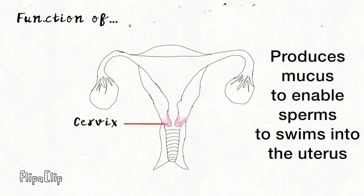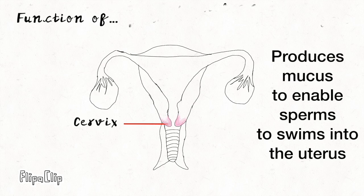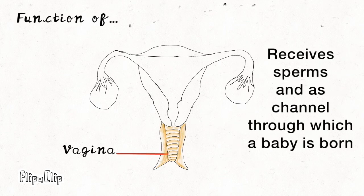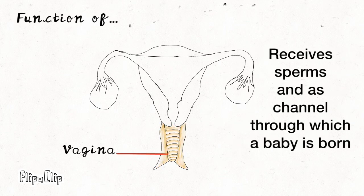The function of the cervix is to produce mucus to enable sperms to swim into the uterus. The function of the vagina is to receive sperms and acts as a channel through which a baby is born.